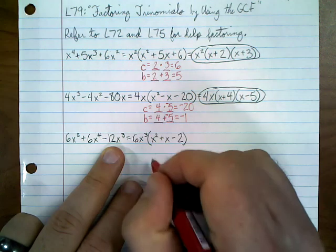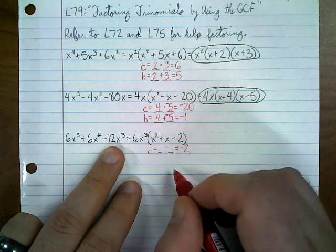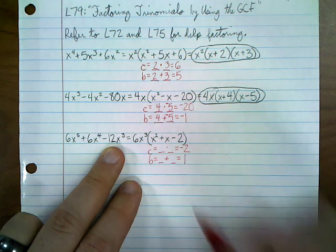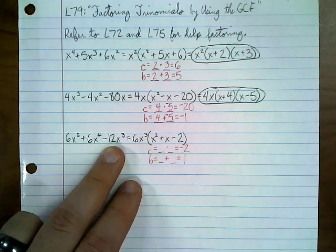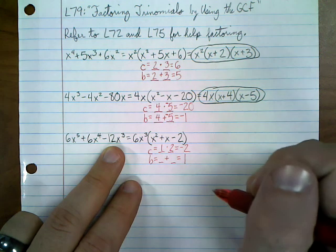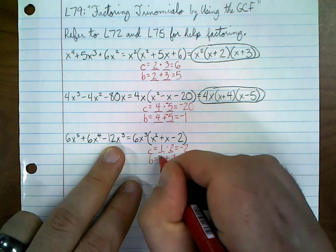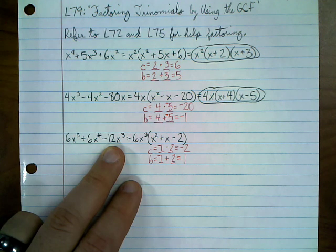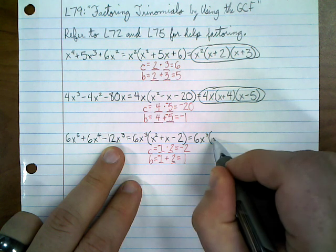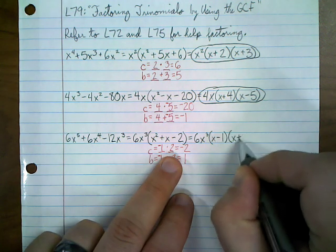Looking at B and C for the remaining trinomial: C is something times something equaling negative 2, so the factors have opposite signs. B is something plus something equaling positive 1. Since 2 is prime, it really can only be 1 and 2. To get a positive sum with opposite signs, the bigger number must be positive, so the negative goes to the 1. Therefore, completely factored: 6x cubed times (x minus 1) times (x plus 2).